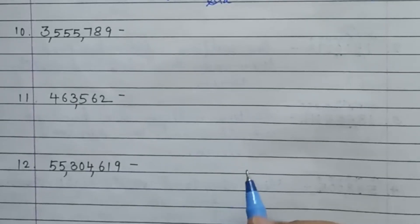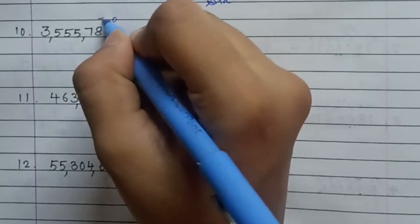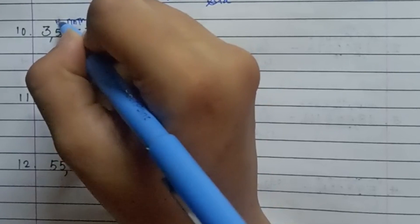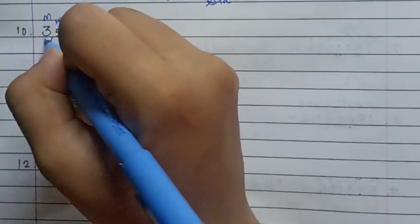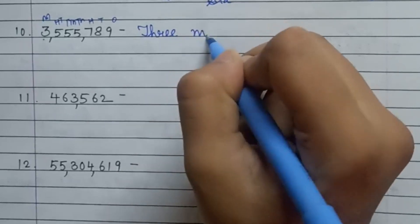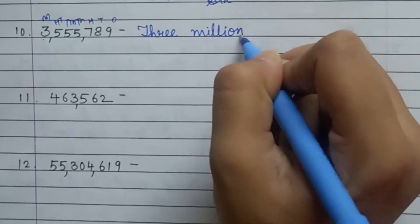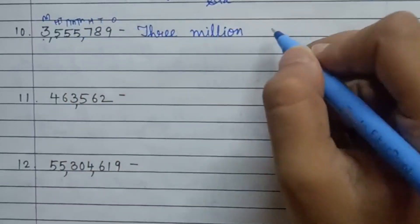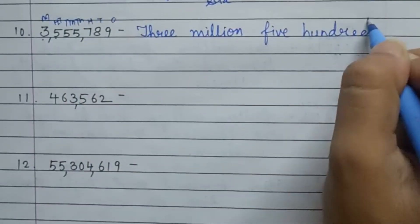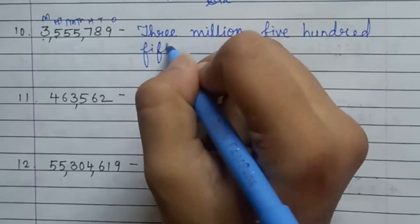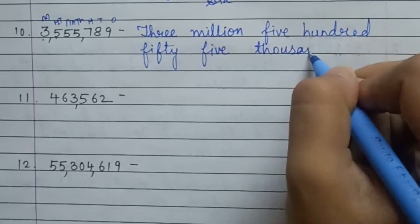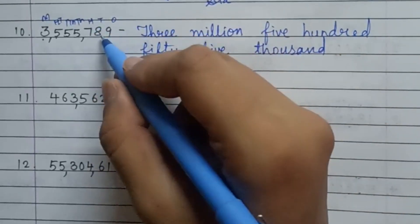Next question. Ones, tens, hundreds, thousand, ten thousand, hundred thousand, million. Three million. Five hundred fifty-five thousand. Seven hundred eighty-nine.